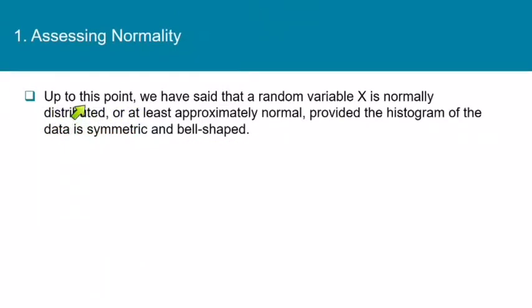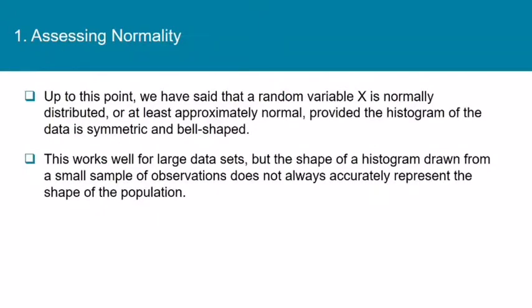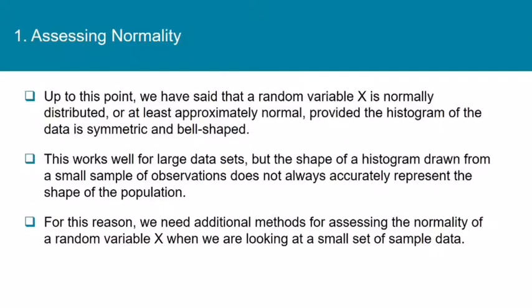Up to this point, we have always said that a random variable x is normally distributed, or at least approximately normal, if the histogram of the data is symmetric and bell-shaped. This works well for large datasets, but the shape of a histogram drawn from a small sample doesn't always accurately represent the shape of the population. For this reason, we need another way to tell if a random variable is normally distributed when we're looking at a small set of sample data.